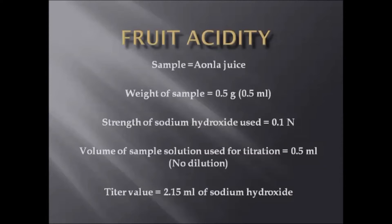Fruit acid — how to calculate fruit acid. Here we have taken amla juice as the sample. We have taken 0.5 grams, that means 0.5 ml, of pure amla juice. We have taken sodium hydroxide; the strength of the sodium hydroxide is 0.1 normal. The volume of the sample solution used for titration is 0.5 ml. We have not diluted the solution; directly we have taken 0.5 ml of solution. We got a titrate value of 2.15 ml of sodium hydroxide.